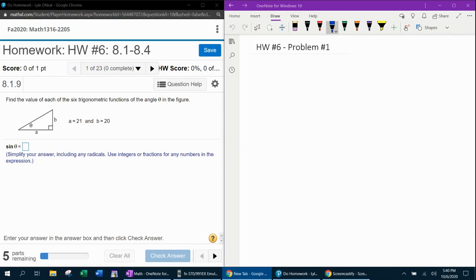All right, here we go. Question number one from our 1316 homework number six in MyLabMath. They want us to find the value of each of the six trigonometric functions, and they've given us a triangle with two sides.